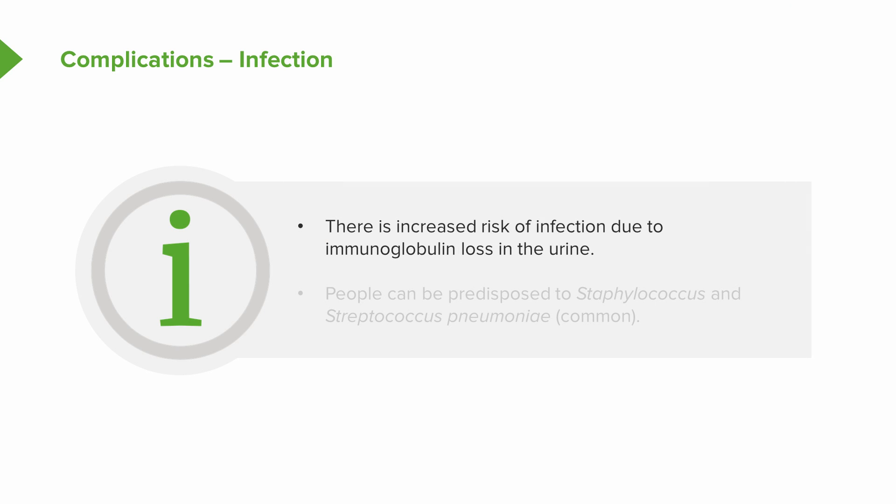Another complication of having nephrotic syndrome is infection and increased risk of developing infections. This is because not only are we losing albumin, we're losing immunoglobulins through the urine as well. Remember that glomerular capillary wall is breached. So we can lose immunoglobulins, and when that happens, people can be predisposed to things like Staphylococcus or Strep, which are most common.